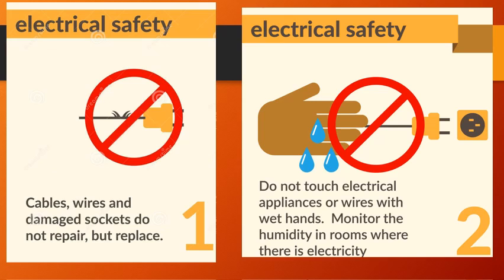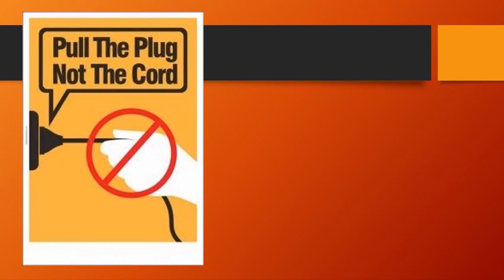Second, do not touch electrical appliances or wires with wet hands. Monitor the humidity in rooms where there is electricity. One should not touch electrical appliances with wet hands since water is a good conductor. Contact with moisture may result in electrical shocks. Third reminder: pull the plug, not the cord. It can cause an electric shock or fire when you pull the cord.